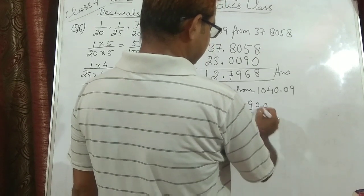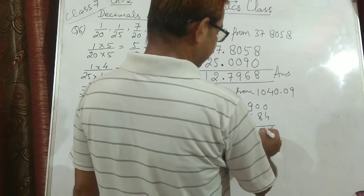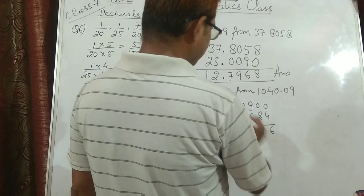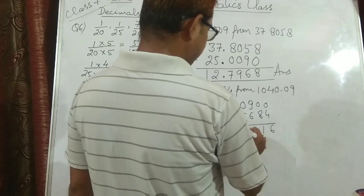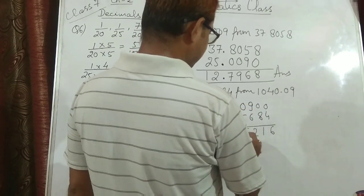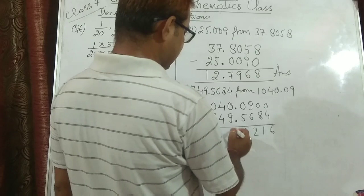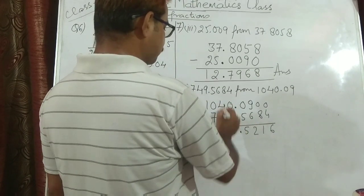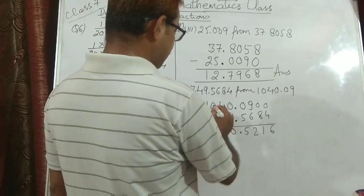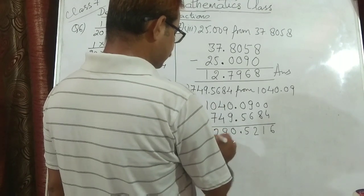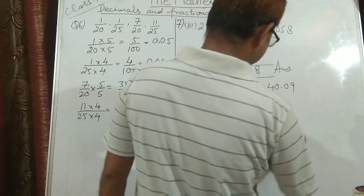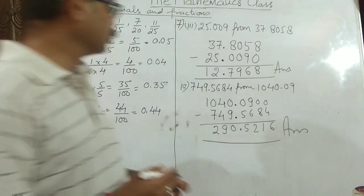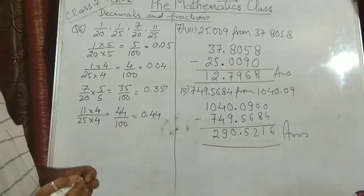Now subtracting: 10 minus 4 is 6; then 9; 9 minus 8 is 1; 8 minus 6 is 2; 10 minus 5 is 5; 9 minus 9 is 0; then 3; 9 and 4; and 9 minus 7 is 2. So this is the final value. We have discussed 2 questions. Now we will be discussing question number 8.